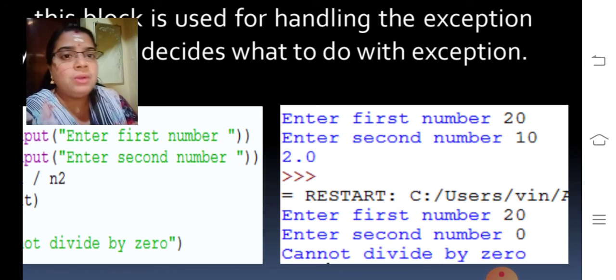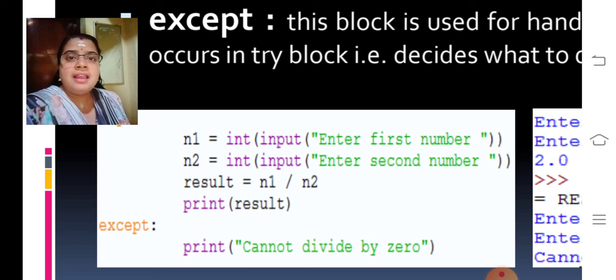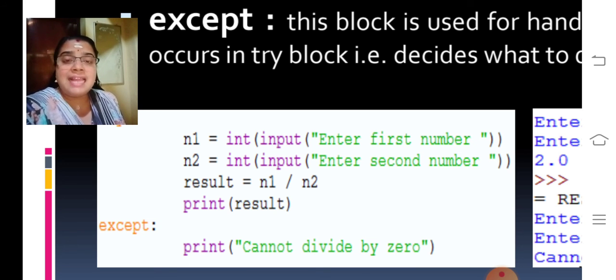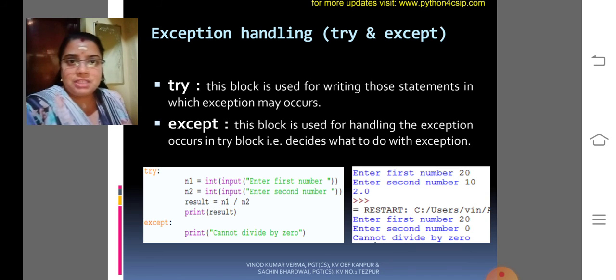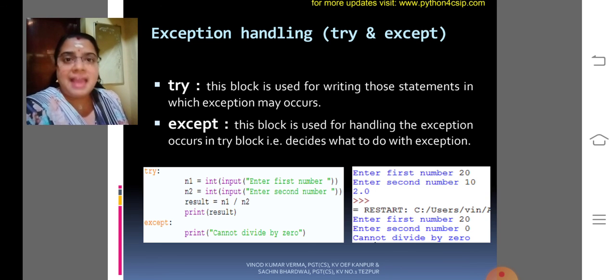So, how to give the statements which we need to be executed, that has to be given in the try block. Whenever the error occurs, that error message has to be given in the except block. I think you are all clear about how to give the try and except for exception handling. That is for error correction.